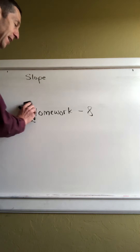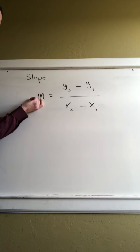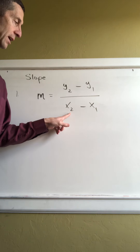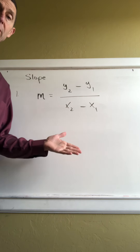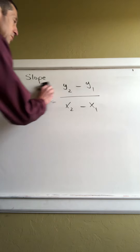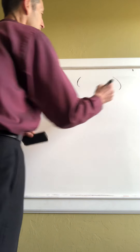Alright guys, coming at you for homework number eight — it's all about slope, slope of a line. We've got eleven examples lined up on slope. The first one is the slope formula, which involves a whole lot of X's and Y's. Slope is identified by the letter M — so instead of S for slope, it's always M. Your slope formula is Y2 minus Y1 over X2 minus X1.